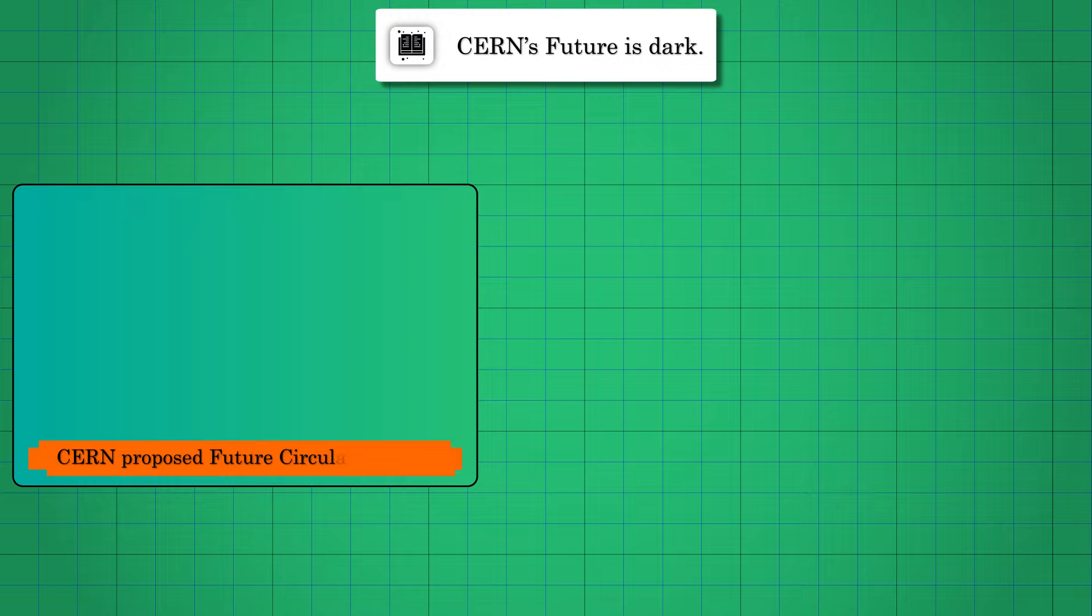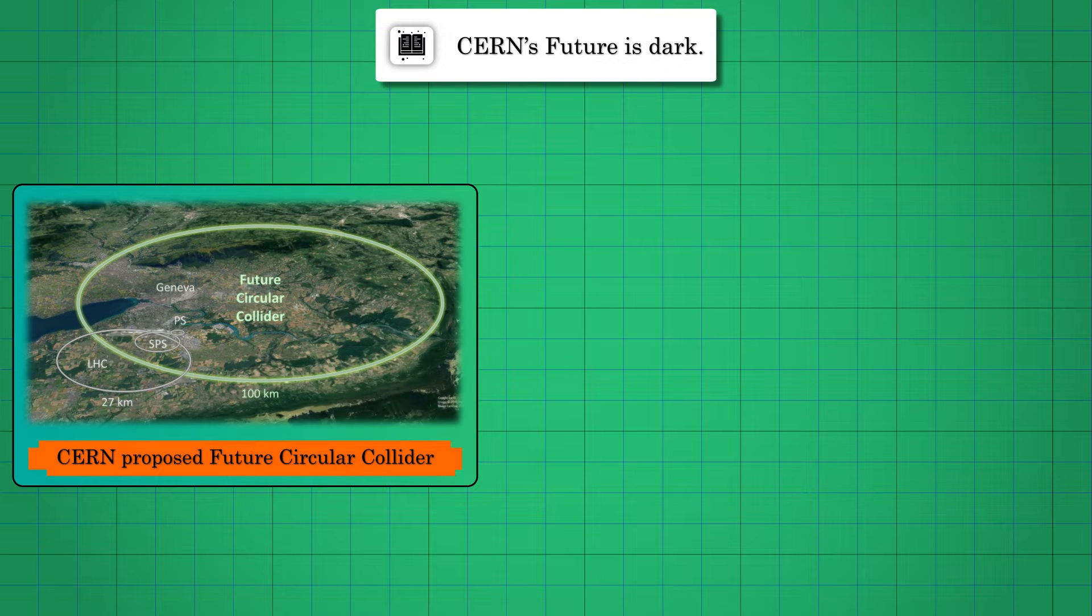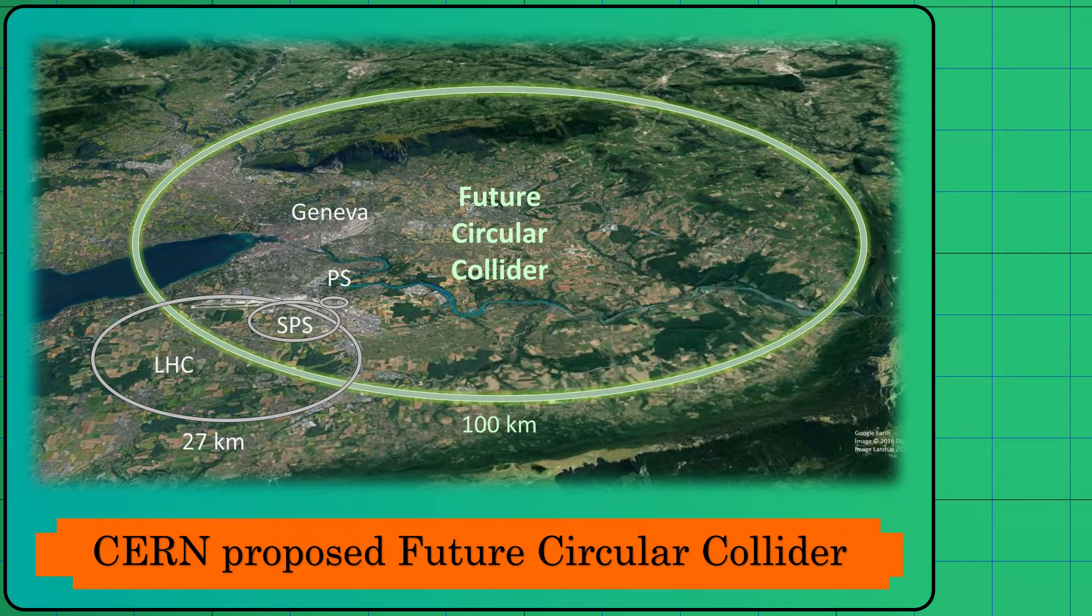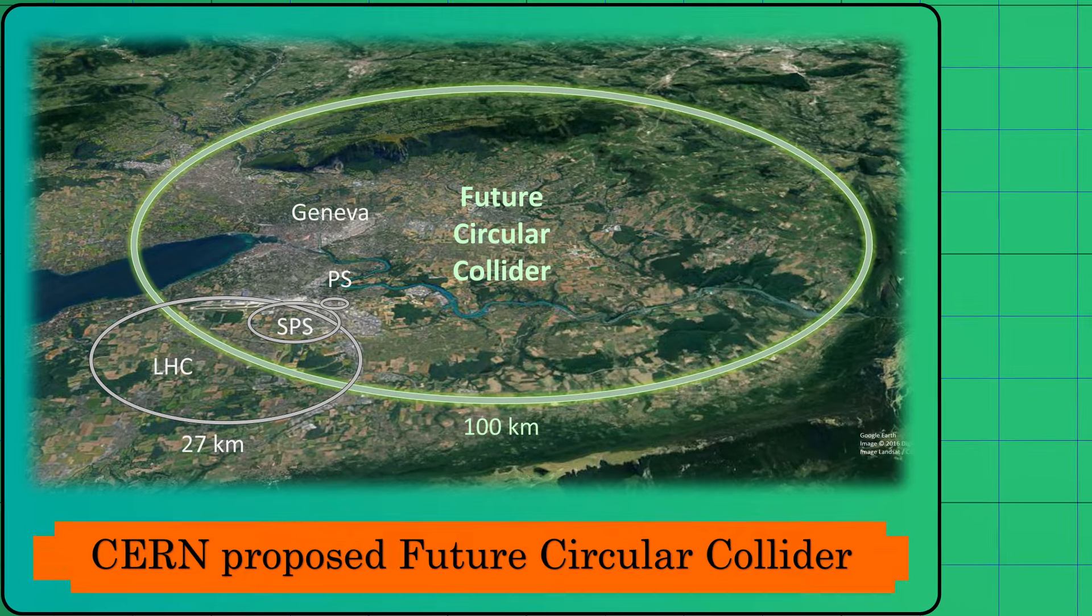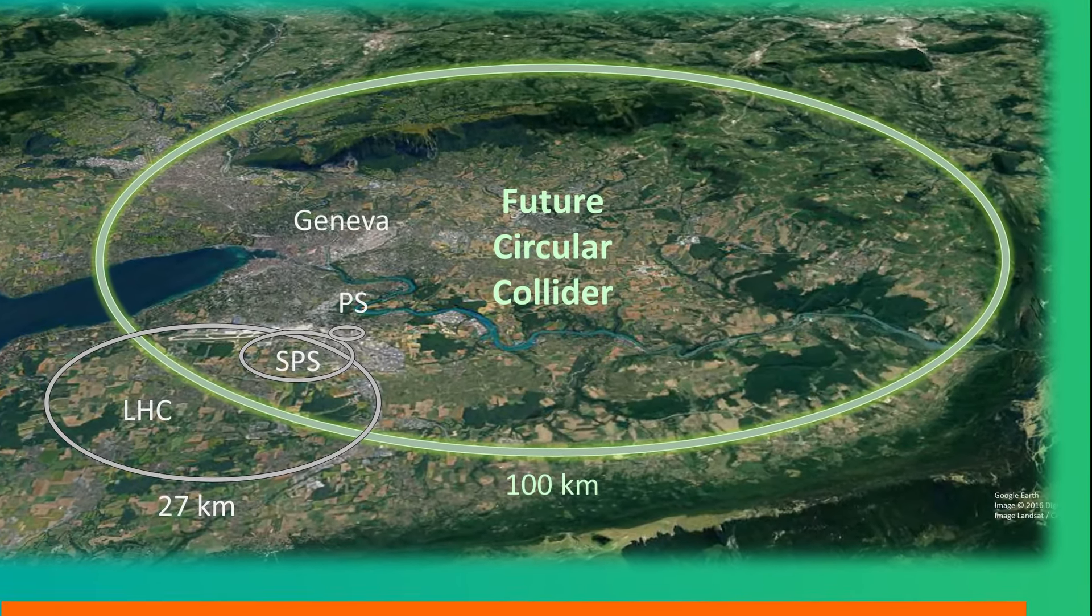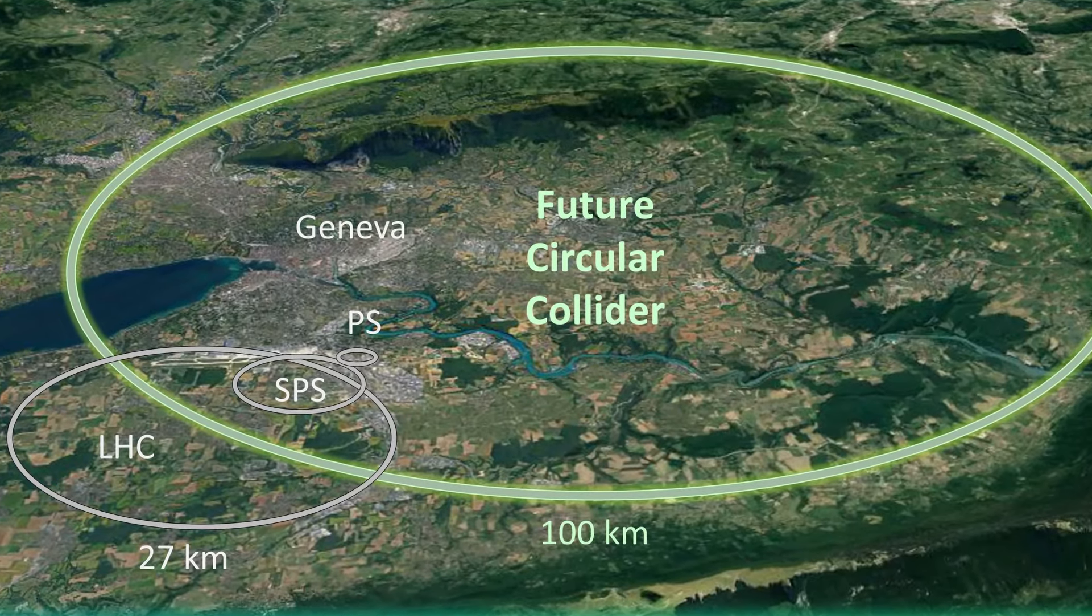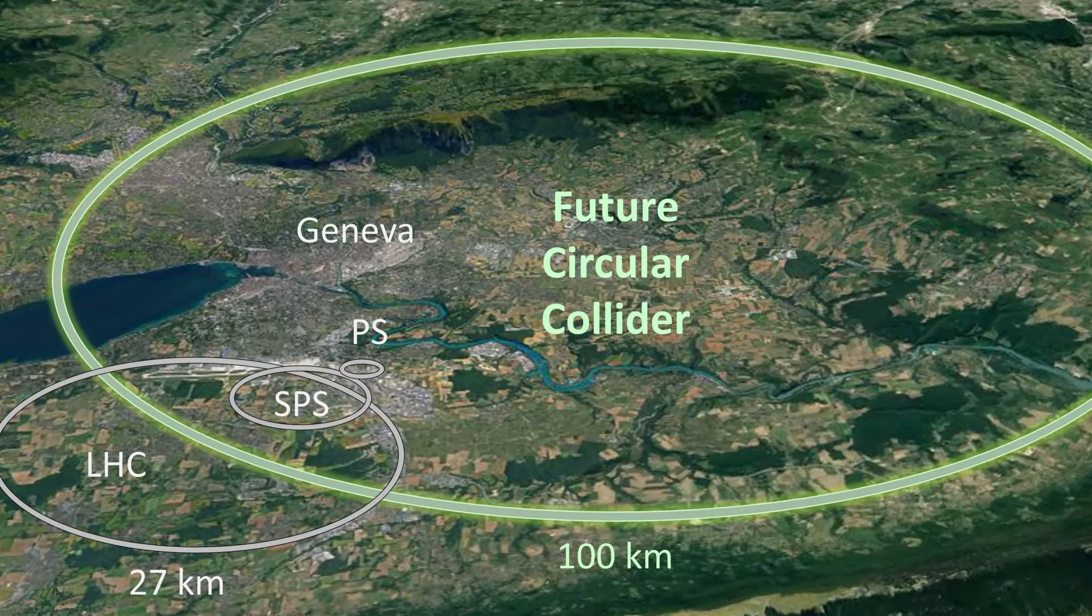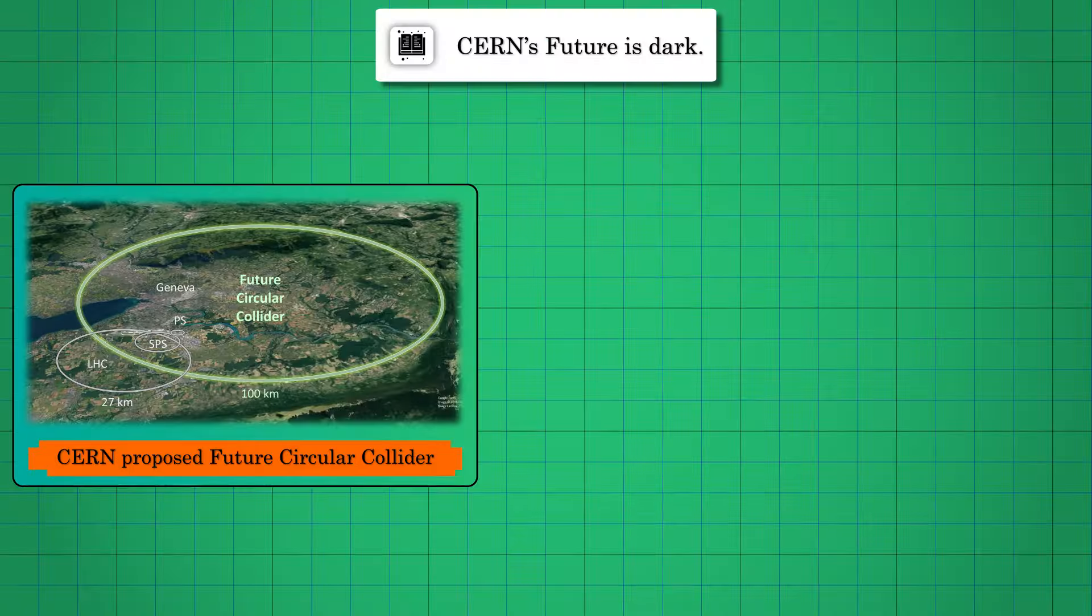In late 2020, CERN, the European Organization for Nuclear Research, proposed the development of a new 100-kilometer particle accelerator known as the Future Circular Collider (FCC), which is more than three times larger than the current particle collider, the LHC. The estimated budget for the new collider is around $17 billion.